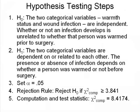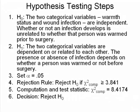We have to look at our computed value of 8.41 and compare that to our rejection rule. It says reject HO if our chi-square computed — which we now know is 8.4174 — is greater than 3.841. Well, 8 is greater than 3, so definitely our chi-square computed is greater than our critical value. So we do get to reject HO. Step six, decision: reject the null hypothesis.